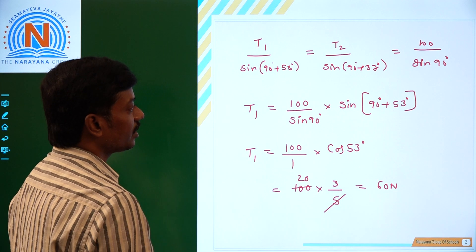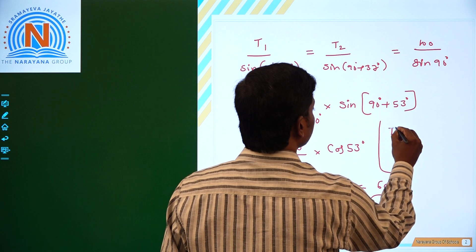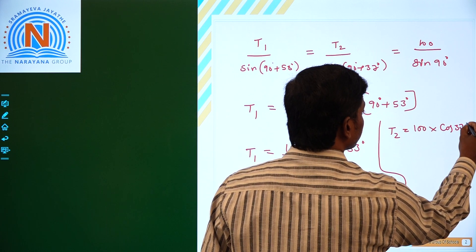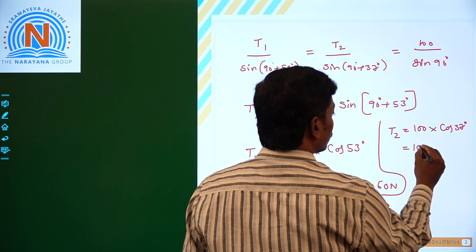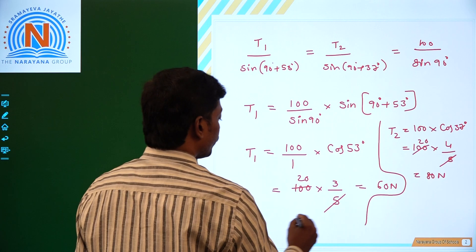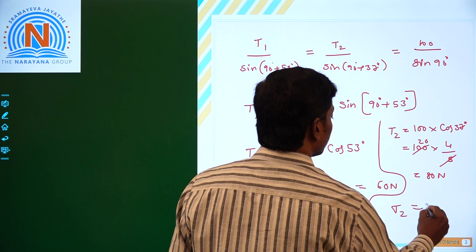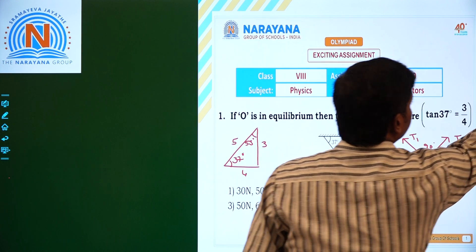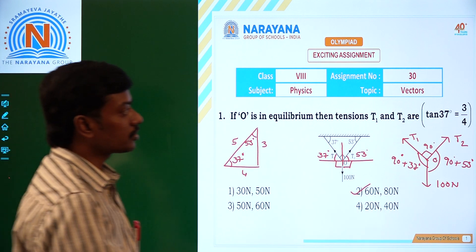Similarly, if you want to find out T2, then T2 is equal to 100 into sine(90 + 37°), which is cos 37°. From the triangle, cos 37° is 4/5, so T2 equals 100 × (4/5), which is 80 newtons. Therefore, T1 is 60 newtons and T2 is 80 newtons. Looking at the options, the second option is correct: 60 newtons and 80 newtons. So let's see the next question.